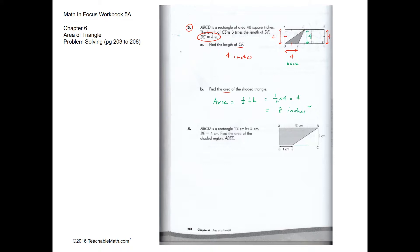Question 4 is an interesting question. We have a rectangle 12 centimeters by 5 centimeters, and DE is 4 centimeters. Instead of finding the shaded portion directly, we find the area of the whole rectangle and subtract the unshaded portion.